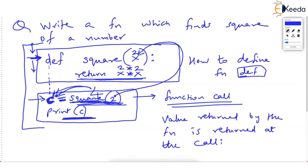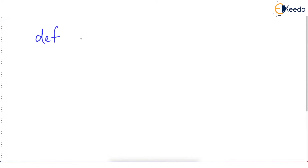Trust me, if you remember this much, you have conquered 90% of the battle. This is a function. The basics: how to define a function with the def keyword, how to call the function, and that the value returned by the function is returned at the call. That's it. Small additional rules come after, but the core is this.